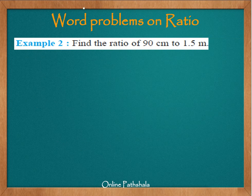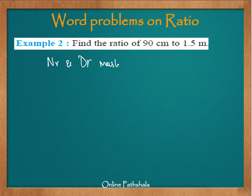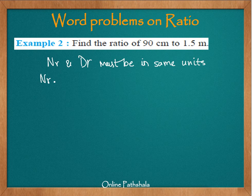Let us look at another example: find the ratio of 90 centimeters to 1.5 meters. We have to find the ratio of two quantities, however one is in centimeters and the other is in meters. To find a ratio, both the numerator and denominator must be in the same units — this is one of the important ideas we discussed. The numerator is 90 centimeters and the denominator is 1.5 meters.